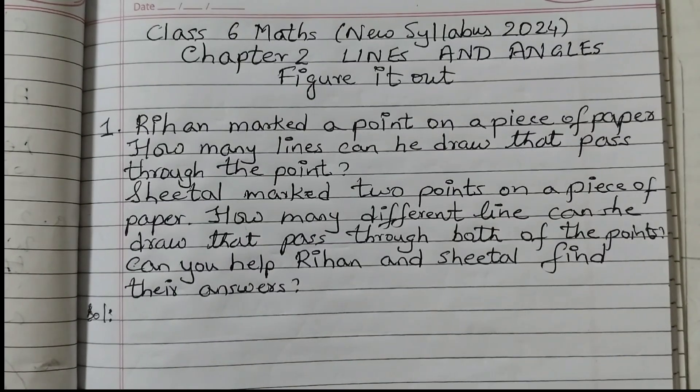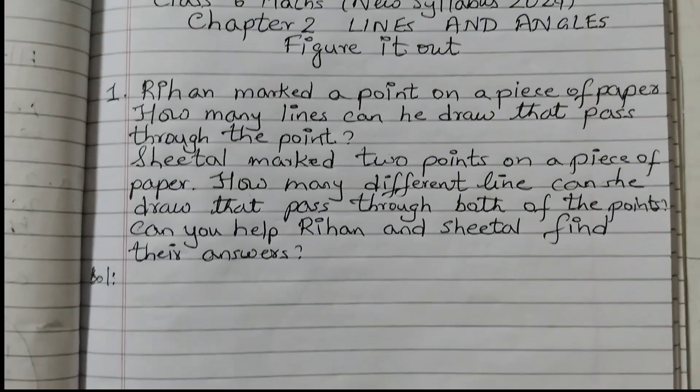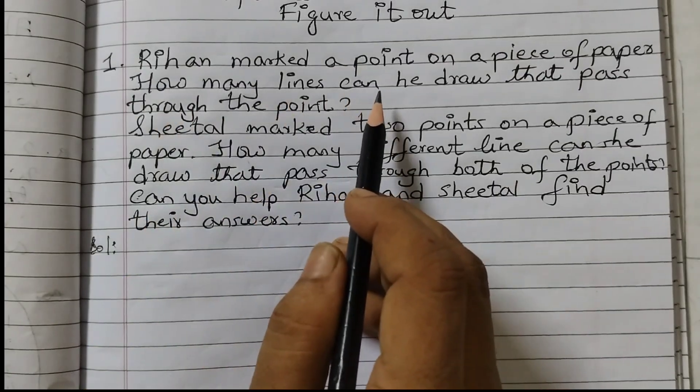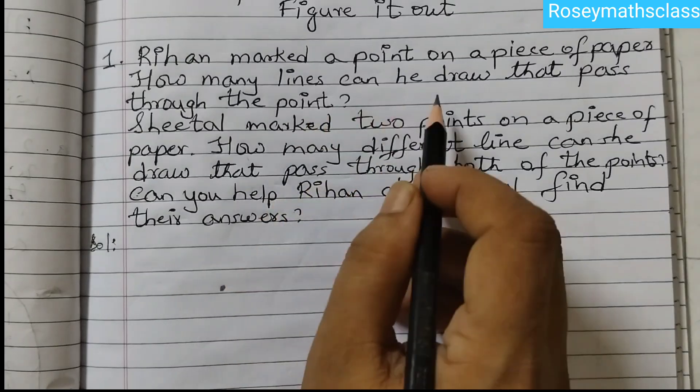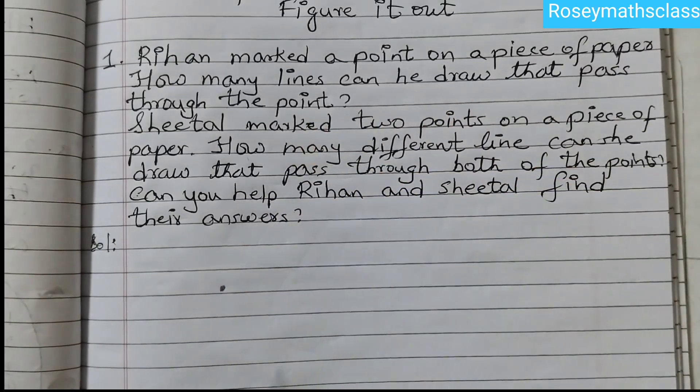First we will help Rihan and then we are going to help Sheetal. Rihan marked a point. A point means just one point. He marked one point and how many lines can he draw passing through this point?